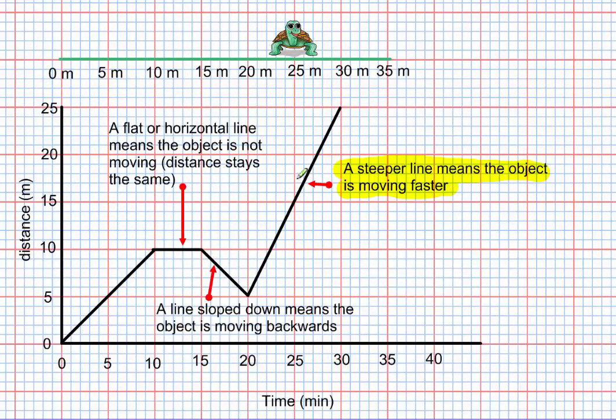The turtle is moving faster from 20 to 30 minutes than he was from 0 to 10 minutes. And we can see that in this 5 minute span, from 20 to 25, that turtle moved 10 meters. From this 5 minute span, from 0 to 5, that turtle moved 5 meters.